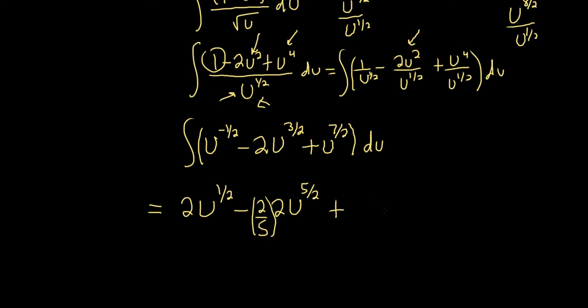Plus u to the, so 7 halves plus 1 is 9 halves. And again, dividing by 9 halves is the same thing as multiplying by 2 ninths. And we have our plus c.